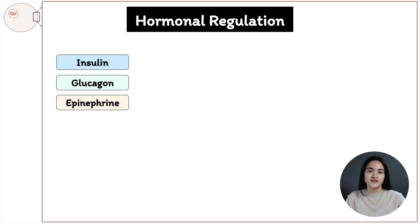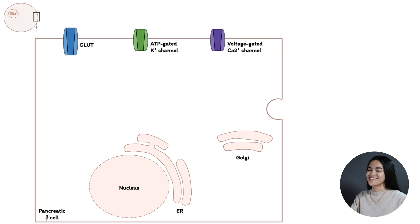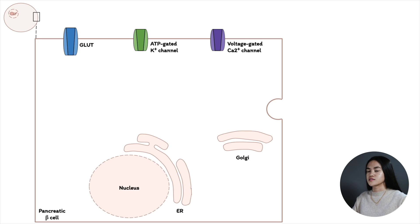Starting with insulin: after consuming a high carbohydrate meal, blood glucose levels increase and this causes insulin secretion by the pancreas. The hormones insulin and glucagon are produced by specialized pancreatic cells called the islets of Langerhans. Alpha cells produce glucagon and beta cells produce insulin.